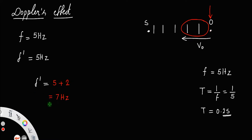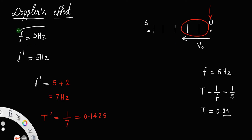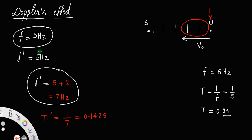So what about his new time period T dash? T dash is 1 by 7, which is approximately 0.142 seconds. This means while he is moving, the frequency from the source and the frequency he receives are different. There is a change in the real frequency and apparent frequency.